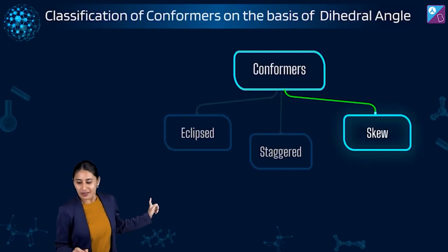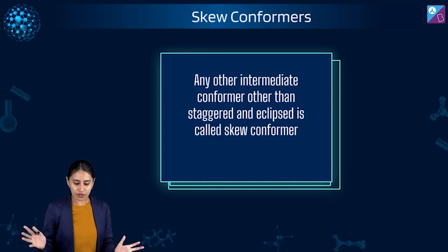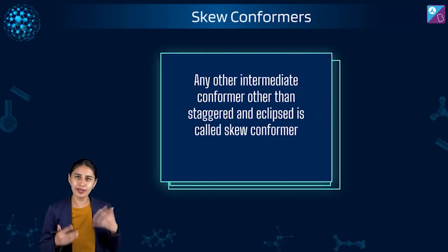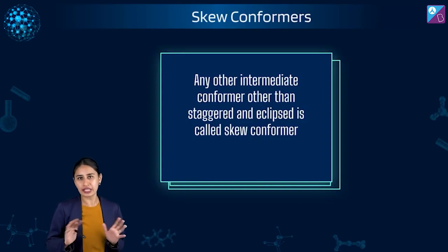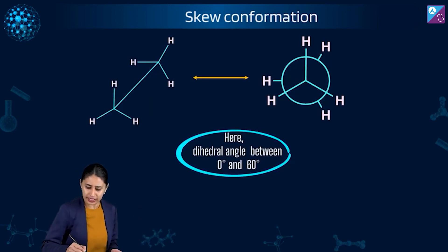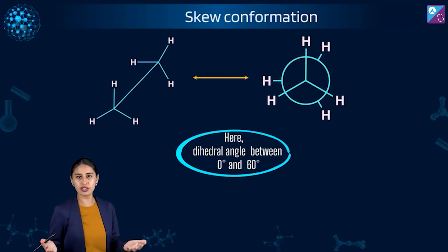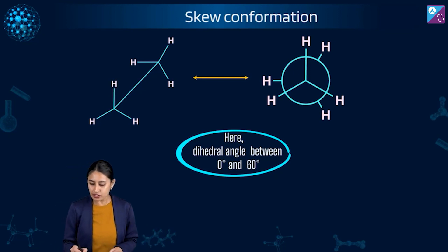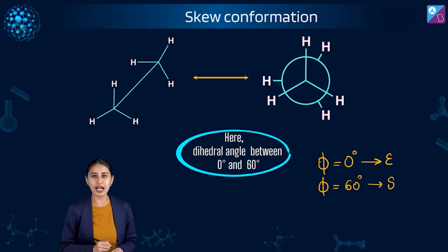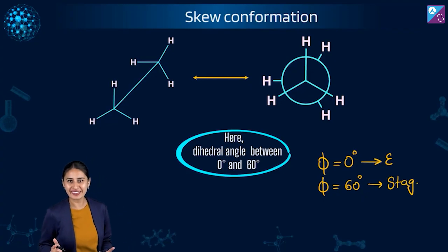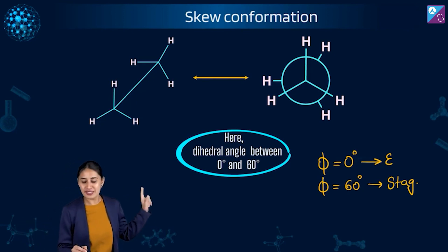Now let's understand skew conformers. Any intermediate conformer other than staggered and eclipsed is called a skew conformer. What is not staggered and what is not eclipsed will come under the skew category. To summarize with ethane: when the dihedral angle equals zero degrees, we have eclipsed; when it equals 60 degrees, we have staggered. And if the dihedral angle is anything in between — infinite possibilities — we call them skew conformers.